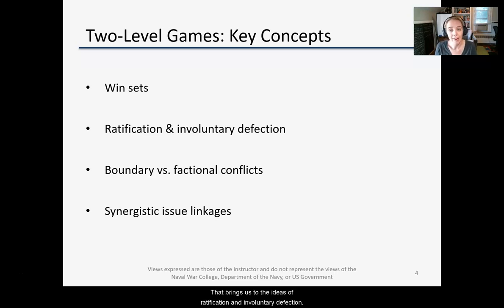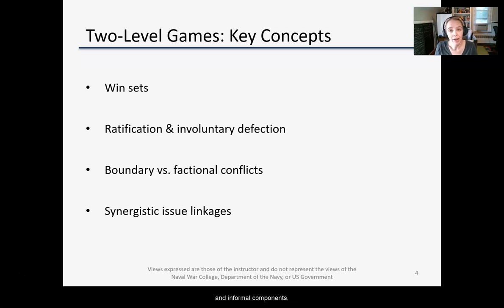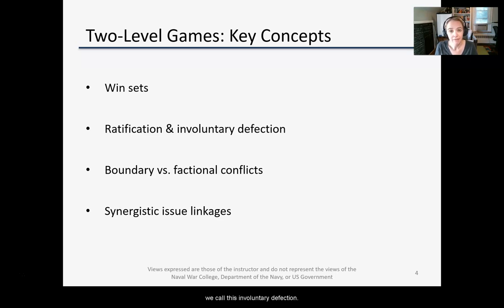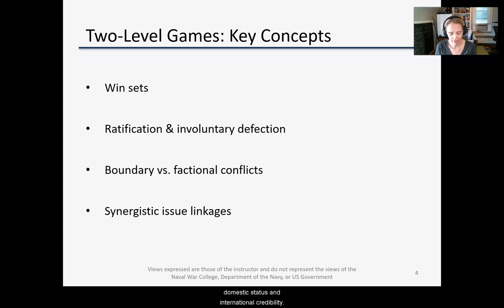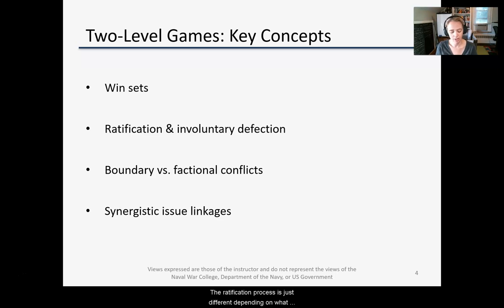That brings us to ratification and involuntary defection. Ratification is the process by which policy is approved or agreed to domestically, and may have both formal and informal components. If the lead negotiator agrees to a deal at the international table that can't be ratified domestically, we call this involuntary defection. The threat of involuntary defection can actually be a useful negotiating tool, but it can also threaten the negotiator's domestic status and international credibility. There's a temptation to think of this framework as applying only to liberal democracies, but even authoritarian leaders face constraints and risk involuntary defection — the ratification process just differs depending on the type of regime.